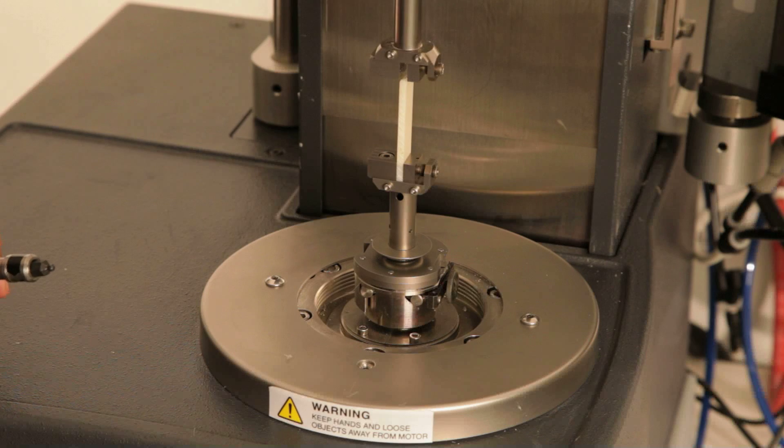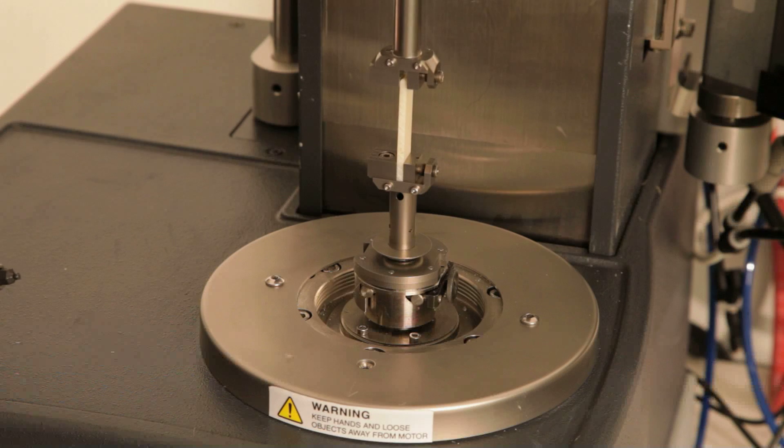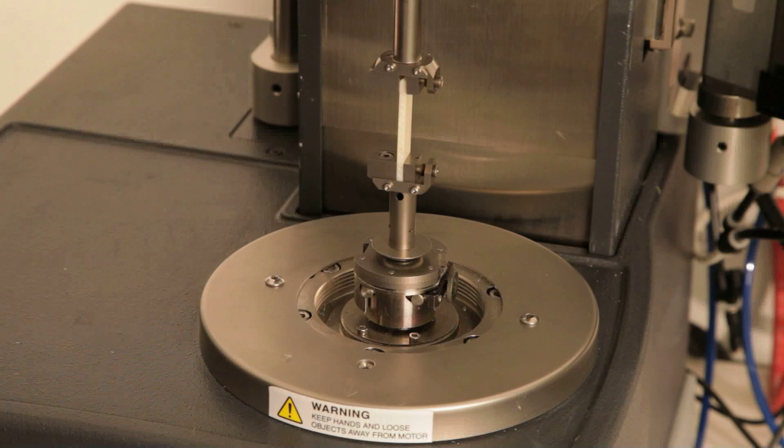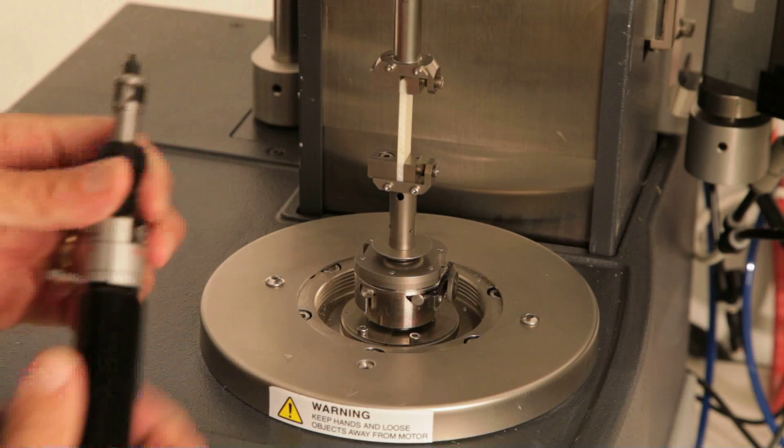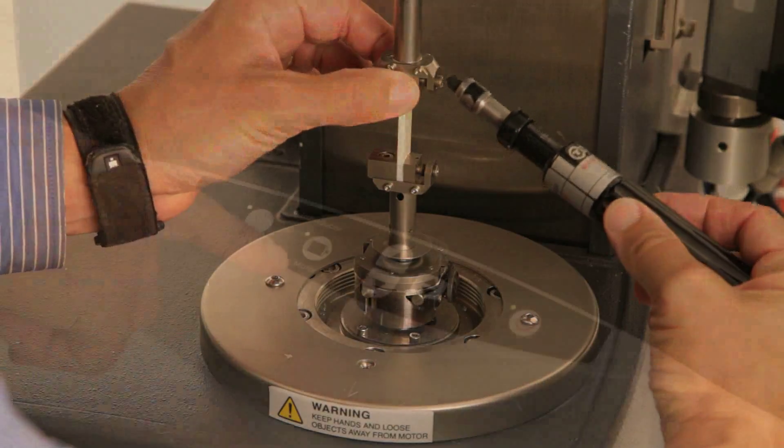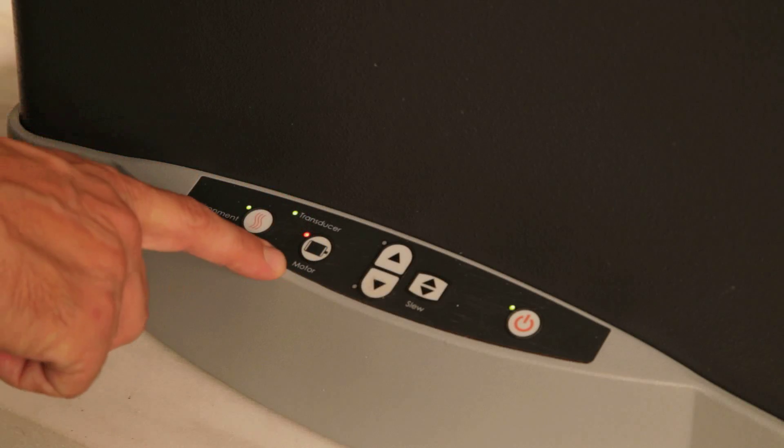Lower the upper stage and insert the top of the sample into the upper clamp. Center the sample into the upper clamp using the reference lines. Tighten the upper clamp with the lower clamp's motor off.